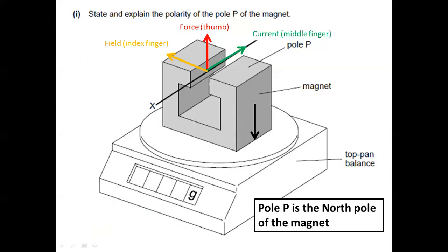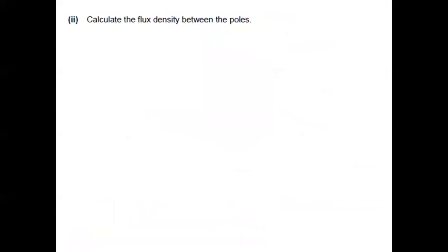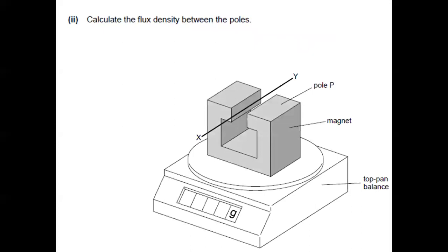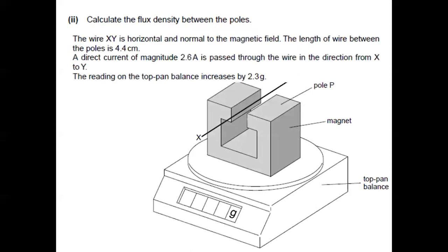Next, second question, calculate the flux density between the poles. Again, let's look at the given information and let's list them down.